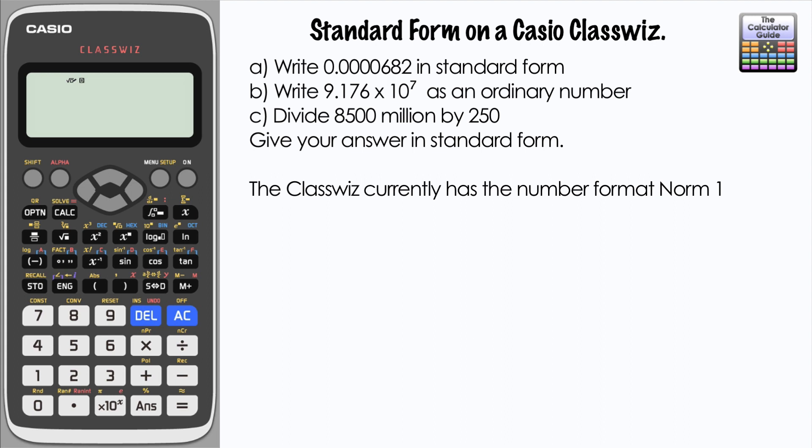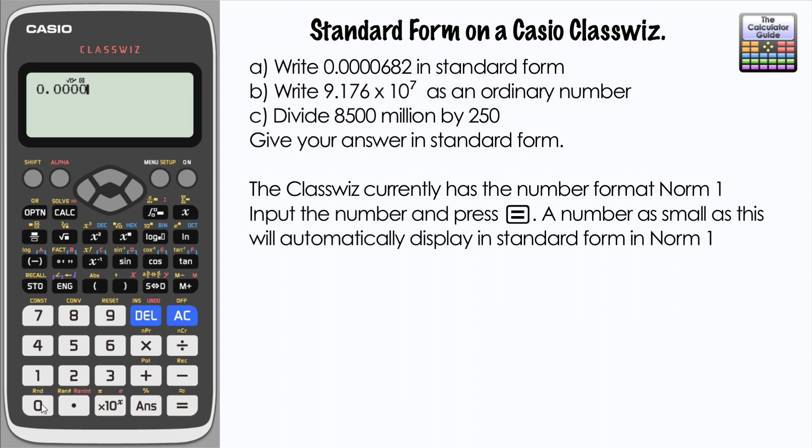The default setting for the number format is something called norm 1, normal 1. And that will display any number in standard form once it's larger than either times 10 to the 9 or smaller than 10 to the minus 2. So it should give us an answer in standard form straight away.